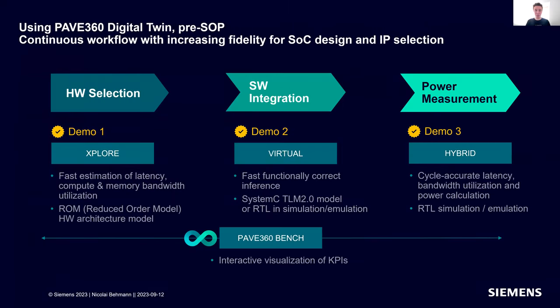I've prepared three demos, one for each step. The first is the exploration phase, focusing on fast estimation of latency, compute utilization, and memory bandwidth using a reduced-order model for hardware architectures. In the virtual domain, we look at fast, functionally correct inference and early software integration. In the hybrid phase for power measurement, we have cycle-accurate latency, bandwidth utilization, and power calculations running RTL in simulation or emulation. All of this is driven by the seamless digital twin in the PACE 360 Bench IDE.